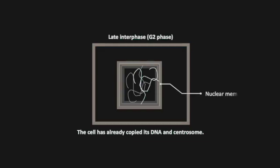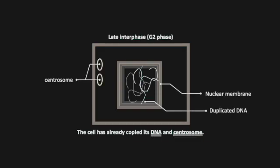In late interphase, the cell has already copied its DNA and the centrosome. How do you split this cell into two?